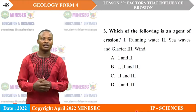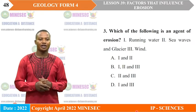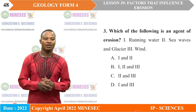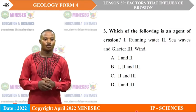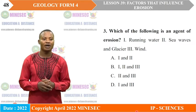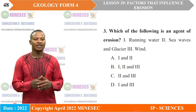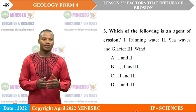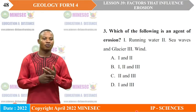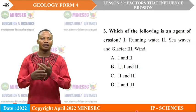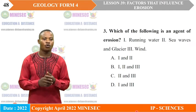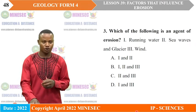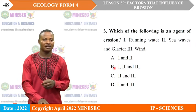Exercise 3: Which of the following is an agent of erosion? 1 — running water; 2 — sea waves and glacier; 3 — wind. We observe that running water, sea waves and glaciers, and wind are all agents of erosion. The correct answer is B — all of the above.